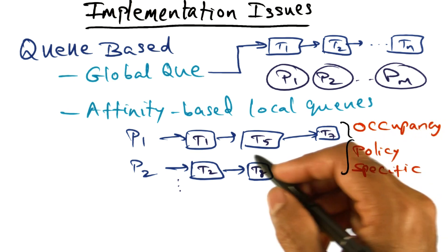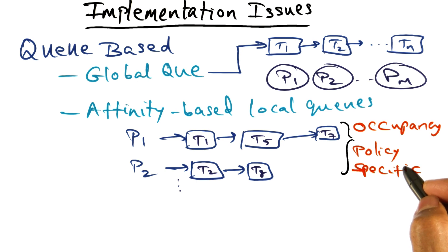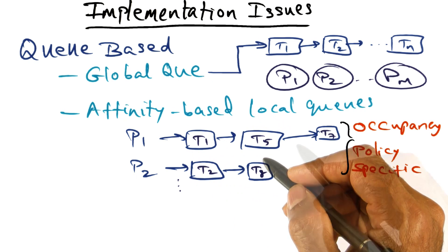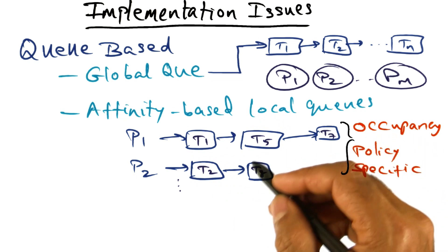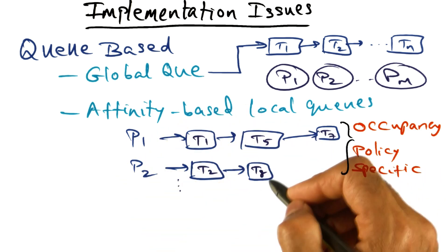So I mentioned that the way these queues are organized is based on policies that the scheduler picks, which might be affinity based or it might be fairness based and so on. But in addition to the policy specific attribute, it might also use additional information in order to organize its queue.